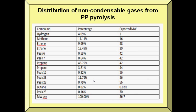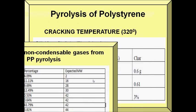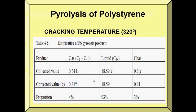Here is the tabulation of the non-condensable gases for polypropylene pyrolysis. For polystyrene pyrolysis, its cracking temperature is 320 degrees Celsius. For the collected values, we have 64 liters for gas, 18.59 grams for liquid, and 0.6 grams for char.